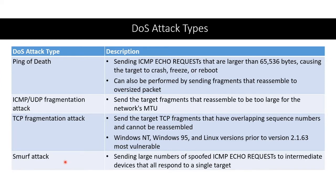A smurf attack uses spoofed ICMP echo requests. We send all these pings to a whole bunch of unrelated machines, but we spoof the source address so they all respond back to the target, as if the target had sent them.